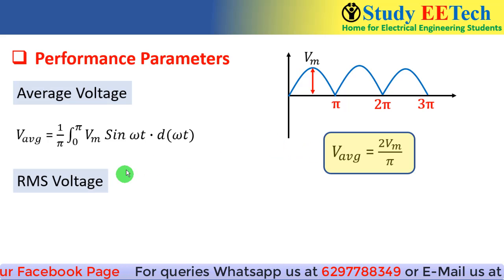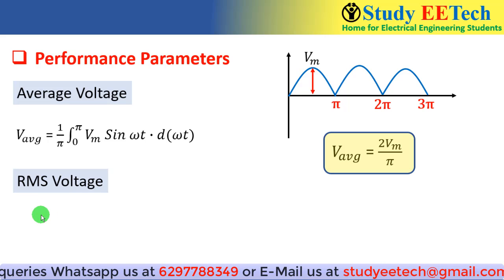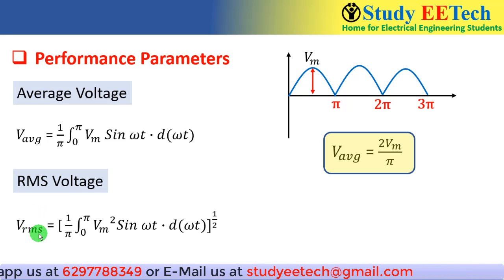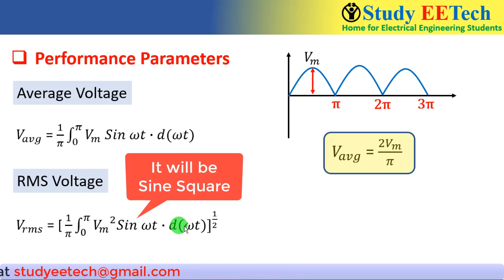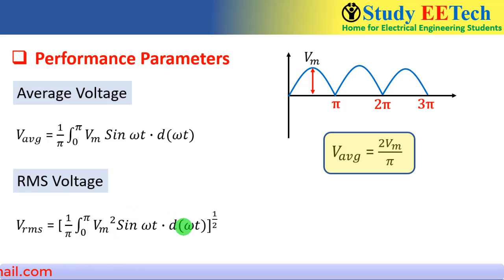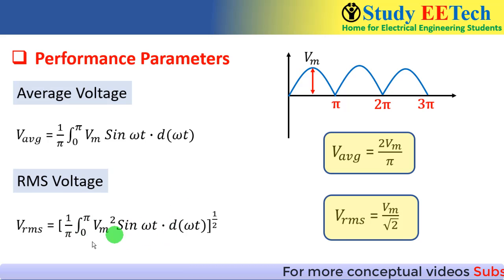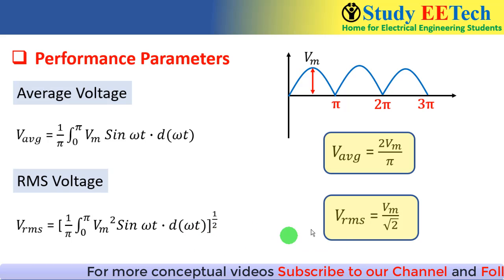Now we will calculate the RMS voltage. The mathematical expression of the RMS voltage is 1/π ∫₀^π Vm² sin² ωt d(ωt). I have missed the square here. Now if we simplify this expression, this will result in Vm/√2. Again, the step-by-step calculation is similar to the RMS voltage calculation of half wave rectifier, only the limits will be different. If you have not watched that video, kindly watch it, or else go to the description where the link is given for step-by-step calculation.